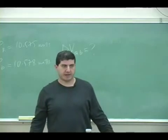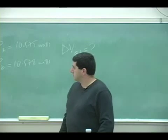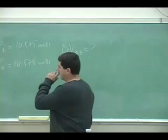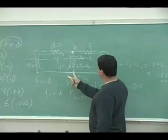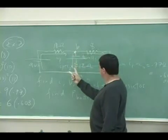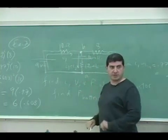You could just say what's VAB? It doesn't matter. So how would you do that? Well, what you could do is you could say, if I start at A and go up, find all the potentials that I gain and lose until I get to B.